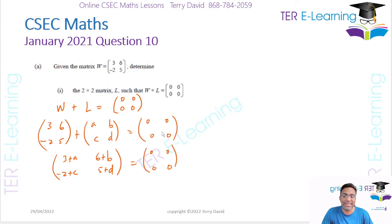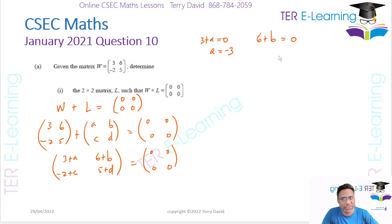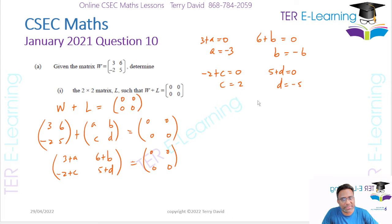Those two matrices are equal, so we can say: 3+A=0, therefore A=-3. Then 6+B=0, therefore B=-6. Then -2+C=0, therefore C=2. And 5+D=0, therefore D=-5. So matrix L is [-3, -6; 2, -5]. That's it.